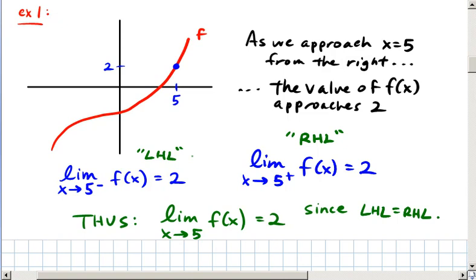So that's a basic example that illustrates an informal explanation of what a limit is. But what if the functional output is something other than 2? In other words, maybe we have a hole or some sort of break in the graph.